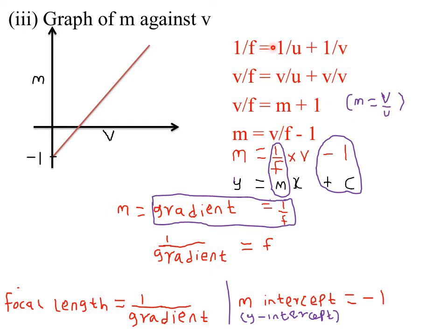Multiplying each term by v: (1/f)×v gives v/f, (1/u)×v gives v/u which is magnification, and (1/v)×v gives 1. So v/f = magnification + 1. I need to start with m, so I take positive 1 to the other side — when it crosses the equal sign it becomes negative — giving m = v/f − 1.